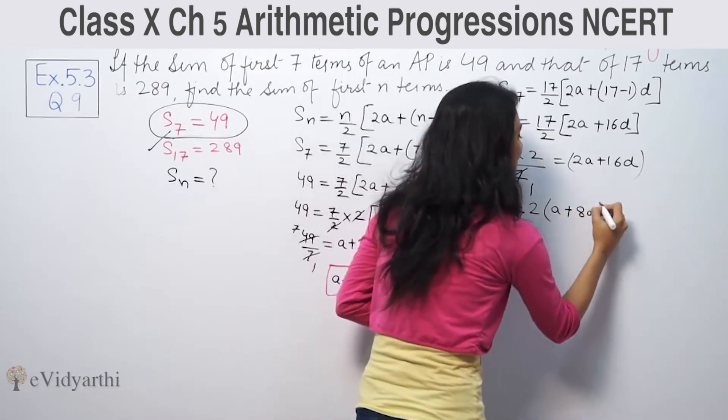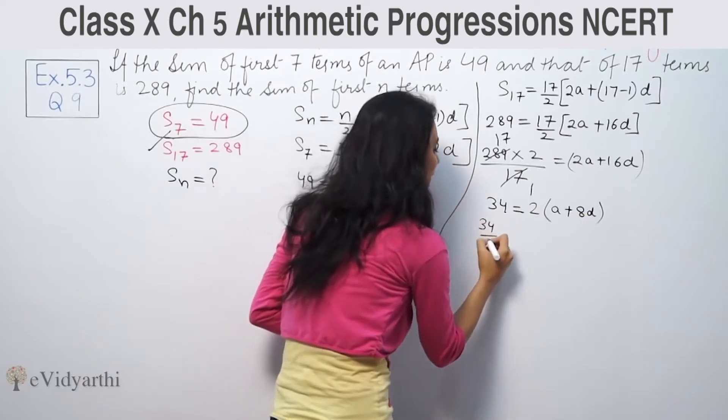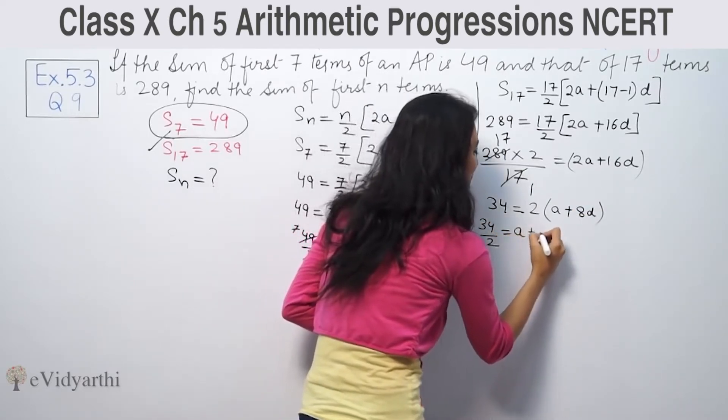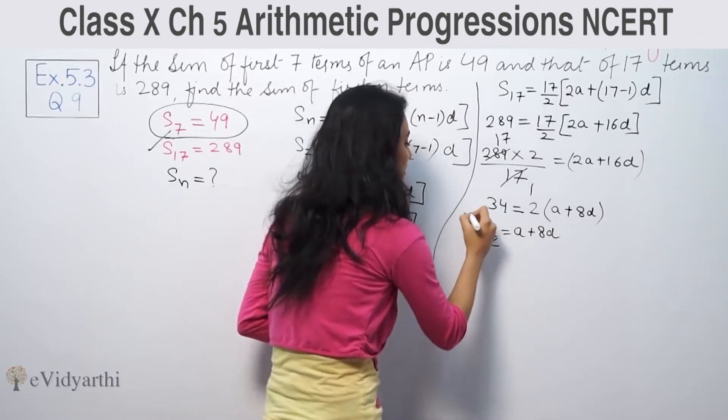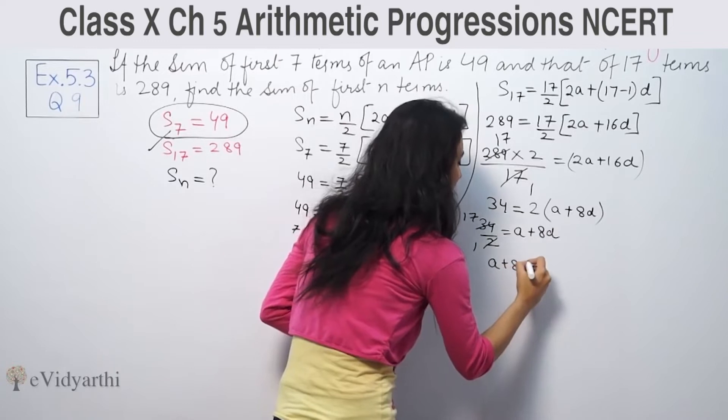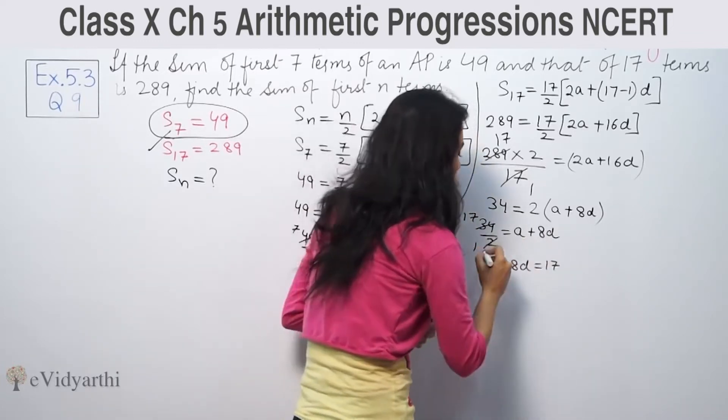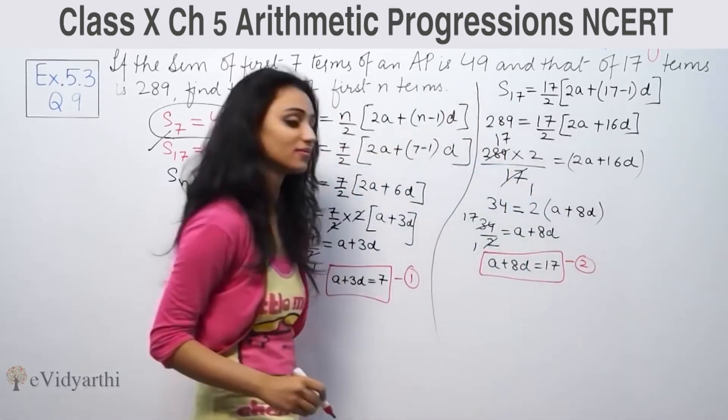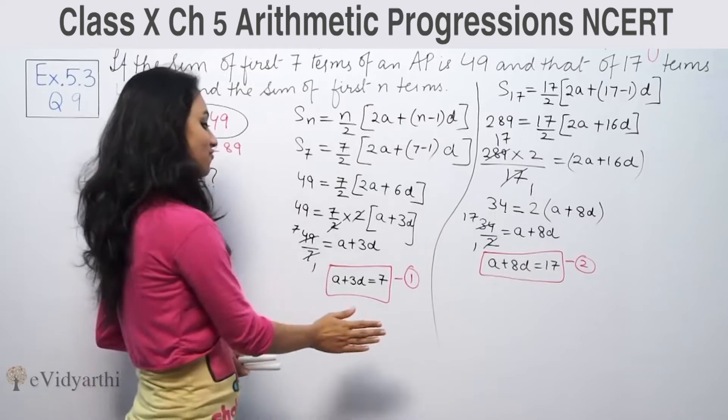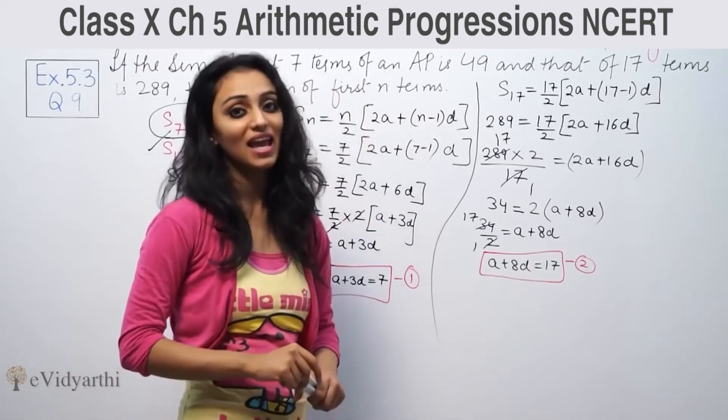After taking 2 common, we get 34/2 = a + 8d. So 17 = a + 8d. This is our second equation. Now from these two equations, we will find a and d.